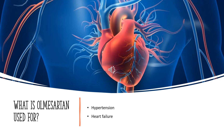ARBs such as Olmesartan have been shown in a number of large-scale clinical outcomes trials to improve cardiovascular outcomes, including reducing risk of myocardial infarction, stroke, the progression of heart failure, and hospitalization. Like other ARBs, Olmesartan blockade of RAAS slows the progression of diabetic nephropathy due to its reno-protective effects.